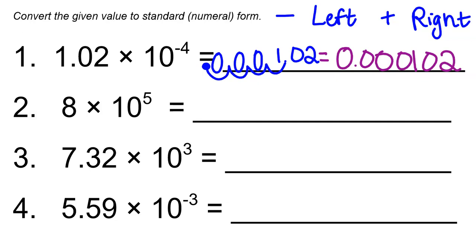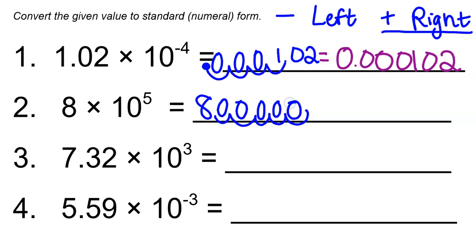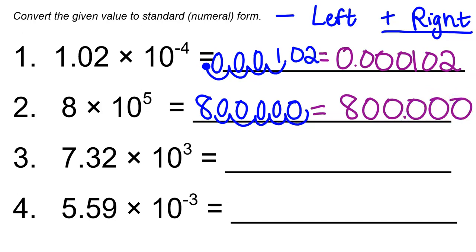Number two: 8 times 10 to the 5th. Our exponent is positive, so we move the decimal point to the right. Starting with 8, we move it one, two, three, four, five times to the right. All those empty spaces we fill with zeros, giving us 800,000. We can put a comma in there to make it easier to read — it's not required, but it helps see all those zeros more easily.